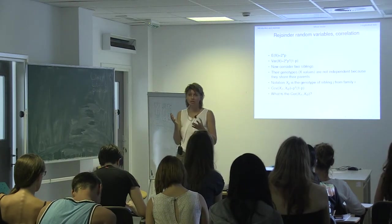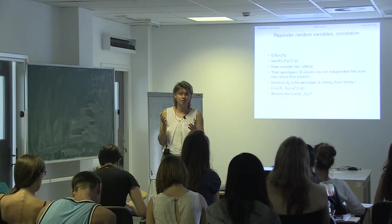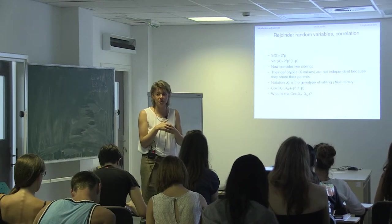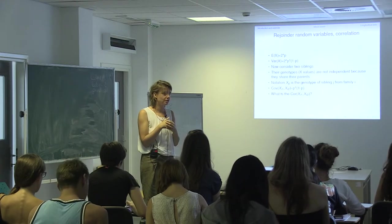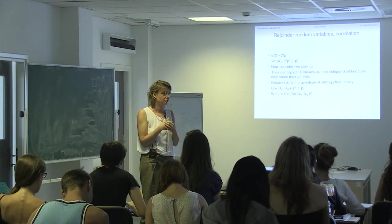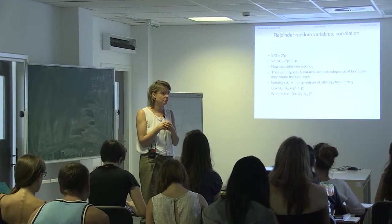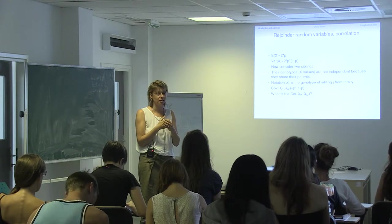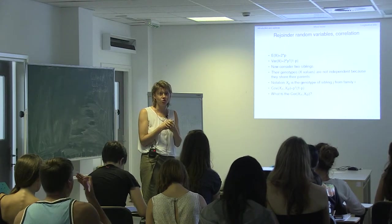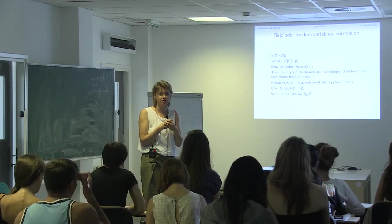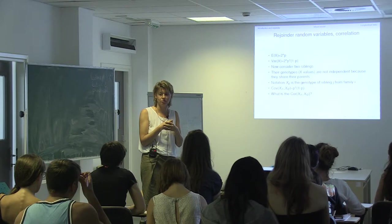So that would be equal to one half. I think that's very logical. The correlation between the genotypes of two siblings is one half on an additive model. That's what we expect, since they share on average half of their genetic material.